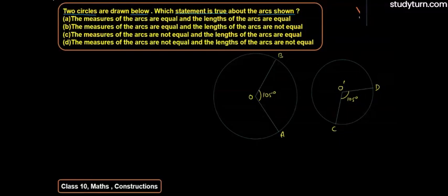The first option is: the measures of the arcs are equal and the lengths of the arcs are equal. The second option is: the measures of the arcs are equal and the lengths of the arcs are not equal. The third option is: the measures of the arcs are not equal and the lengths of the arcs are equal. And the last option is: the measures of the arcs are not equal and the lengths of the arcs are not equal.